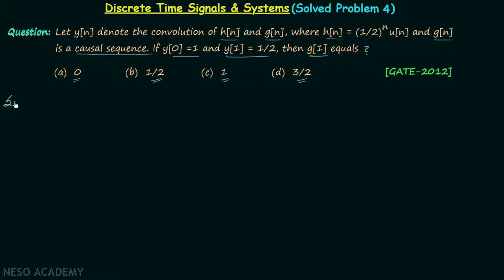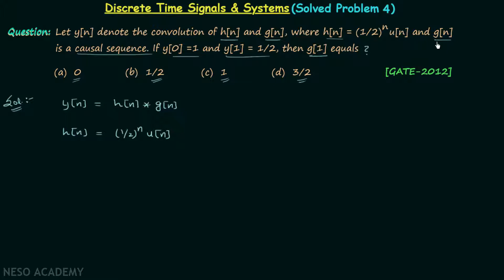Let's move on to the solution. According to the question, y[n] is equal to the convolution of h[n] and g[n]. Signal h[n] is equal to (1/2)^n multiplied by the unit step sequence u[n]. Signal g[n] is a causal sequence, which implies g[n] is equal to 0 for all values of n less than 0.